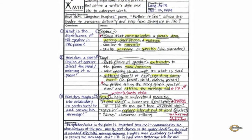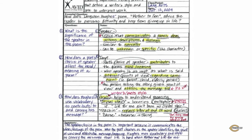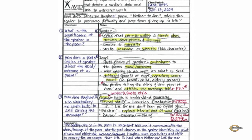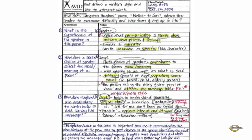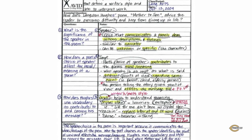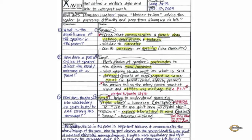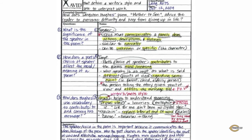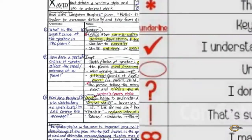In the processing phase, student notes begin to look different as students identify, select, sort, organize, and classify main ideas and details. Students will also evaluate the importance of information taken in their notes.